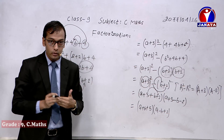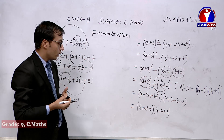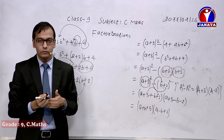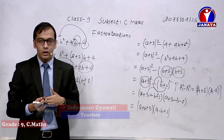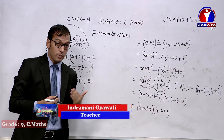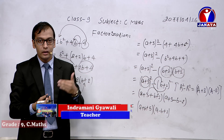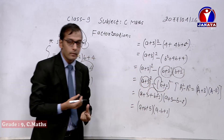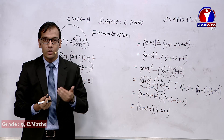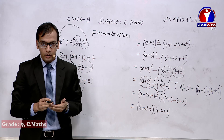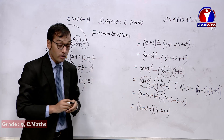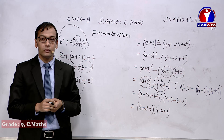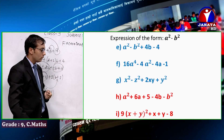In such factorization, we first convert the first two terms into a perfect square by adding a term, and then at the end factorize by changing into the a²−b² form. Similarly, we can practice other questions. Let me take one more question.